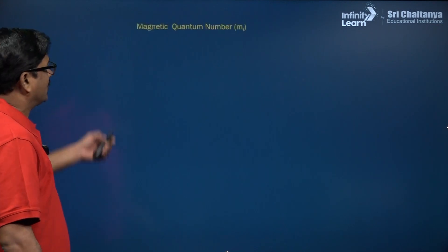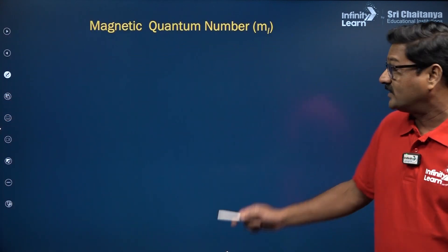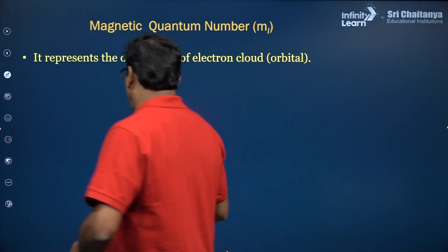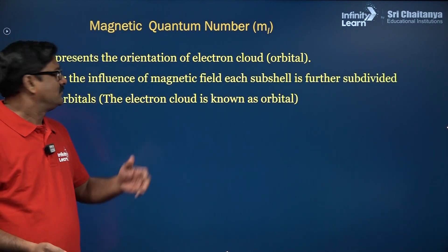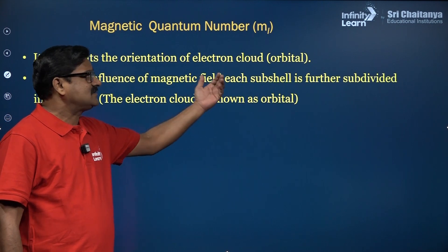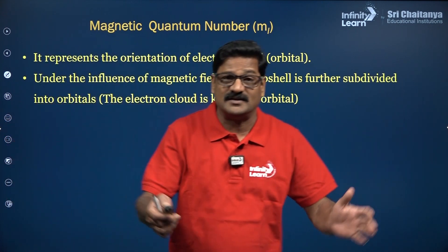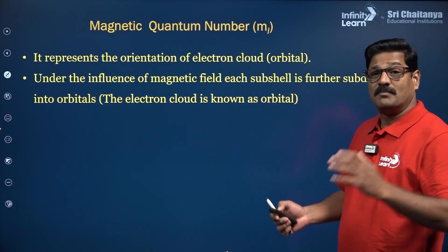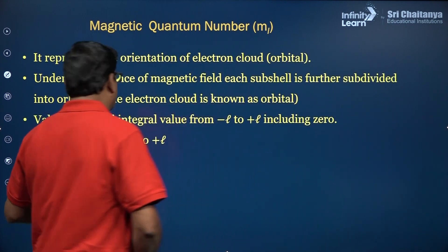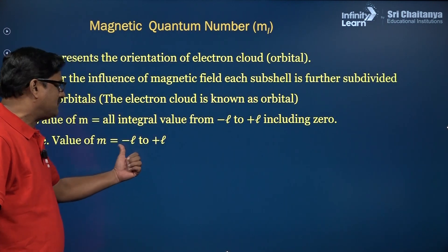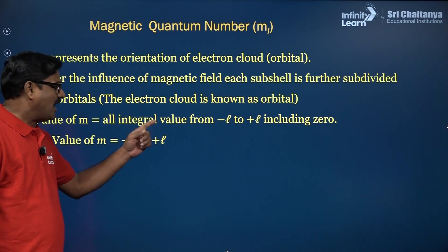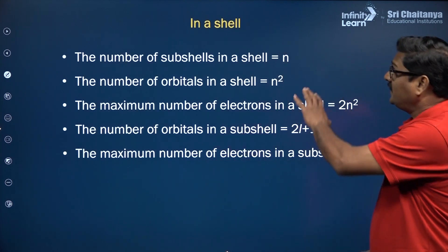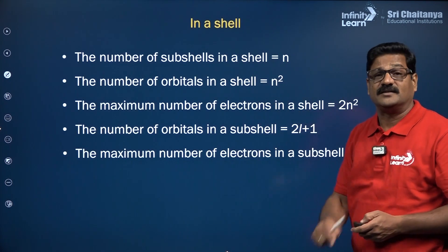Moving forward, the magnetic quantum number signifies the orientation of the orbitals under the influence of a magnetic field. Each sub-shell is further divided into orbitals, and these orbitals are signified by the magnetic quantum number. The magnetic quantum number can have values from −L, including 0, up to +L.